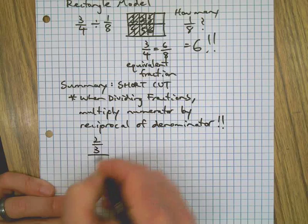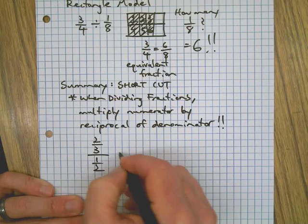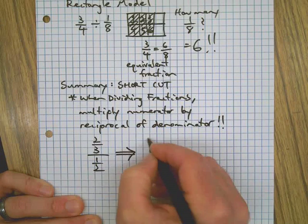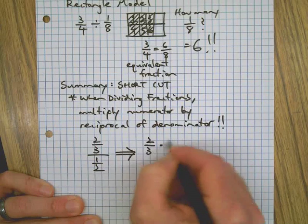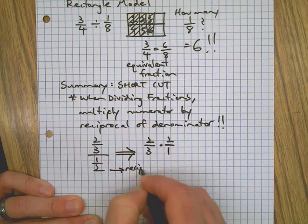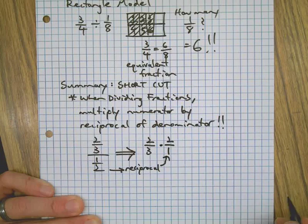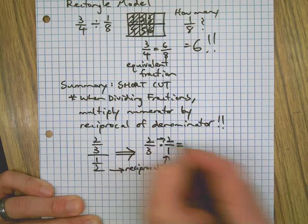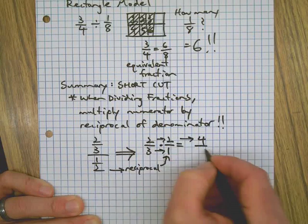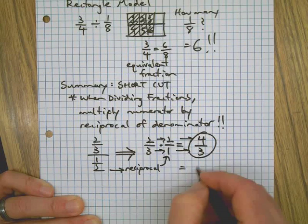For example, we have this problem: 2/3 divided by 1/2. All we do is change it to a multiplication problem—2/3 times 2 over 1, right? The reciprocal is right there. Then we multiply straight across. 2 times 2 is 4, 3 times 1 is 3. There's the answer. We can change it to a mixed number. Bam, there we go.